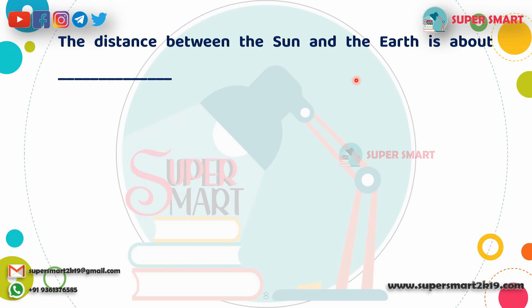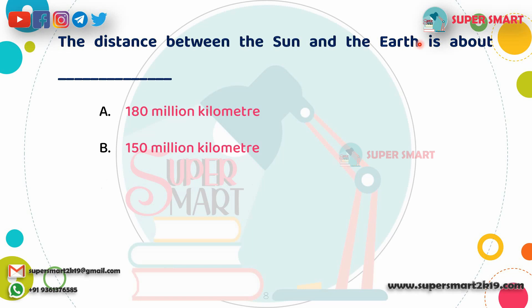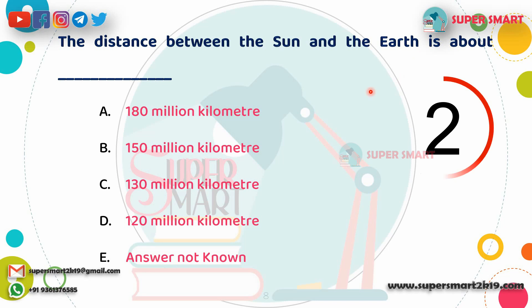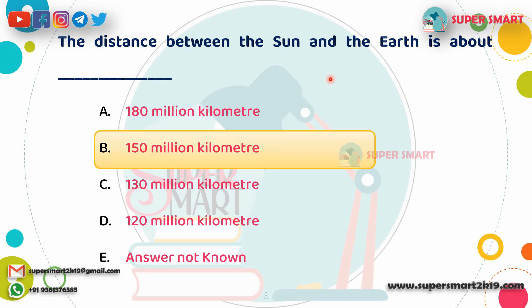Next question: What is the distance between the Sun and the Earth? Answer is 150 million kilometers.